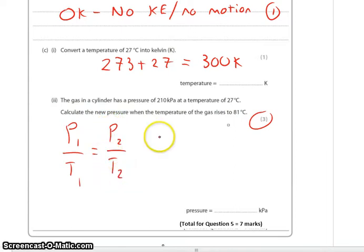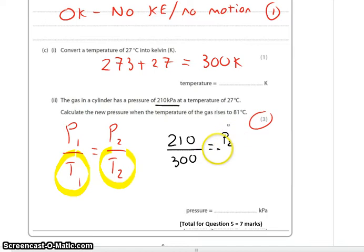Now if we plug our numbers in here, what we've got to make sure of though, is that we do it in Kelvin. So these two temperatures here must be in Kelvin. So that gives us 210 kilopascals at 300 Kelvin. We don't have to worry about putting the kilopascals into Pascals because it's going to affect both sides equally. So the only thing that we have to worry about in terms of units is that we have our temperature in Kelvin.